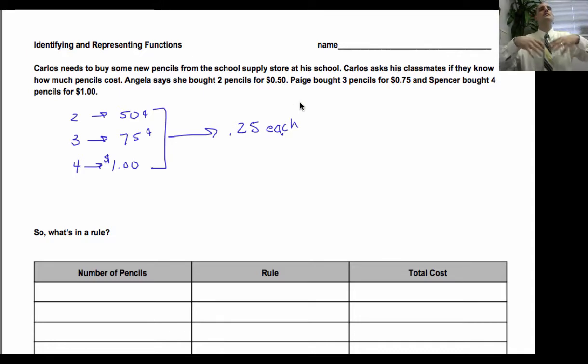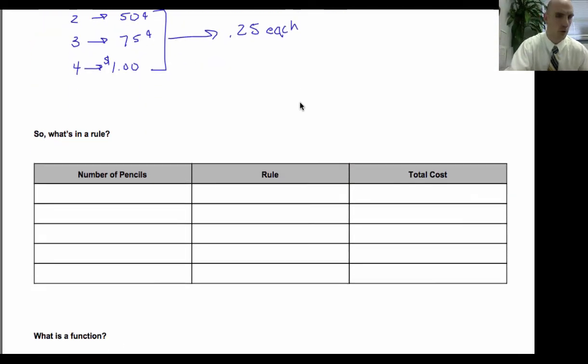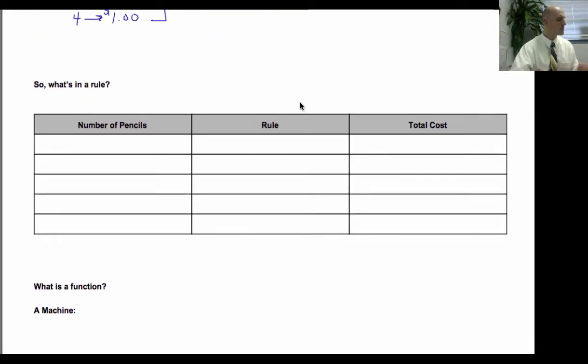And so working backwards, Carlos is trying to figure out, well, how much do these pencils cost? Maybe you see it right away. But if we say, you know, two of them are $0.50, three of them are $0.75, four of them are $1.00.